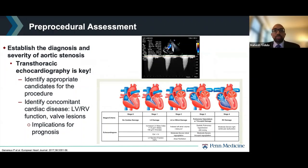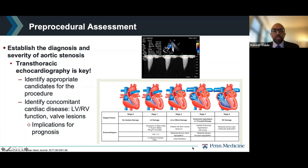The first part of the pre-procedural assessment is to establish the diagnosis and severity of aortic stenosis, where transthoracic echocardiography is key. TTE is also critical to identify appropriate candidates for the procedure and characterize other cardiac consequences of aortic stenosis, such as LV/RV function and other valve lesions. One study looked at the prognostic impact of a staging classification based on the extent of cardiac damage and found it was independently associated with increased mortality after AVR. Therefore, it is key to understand the extent of cardiac remodeling in patients undergoing workup for TAVR.